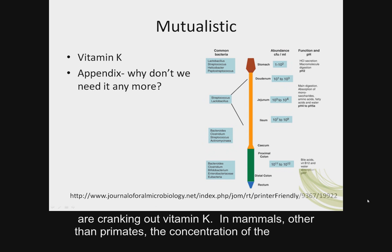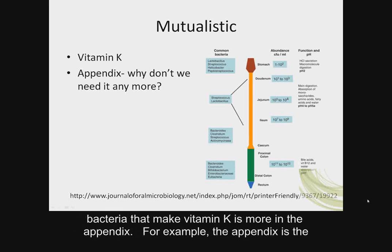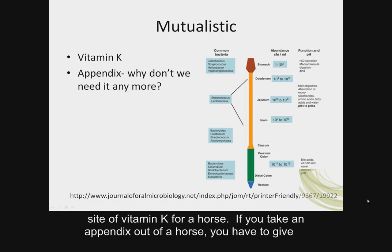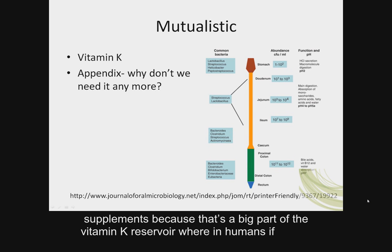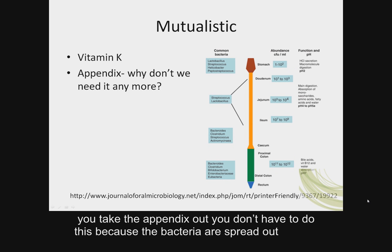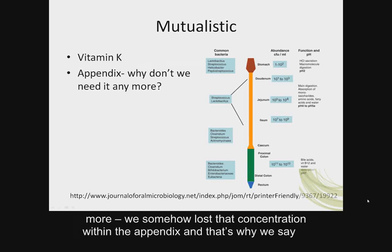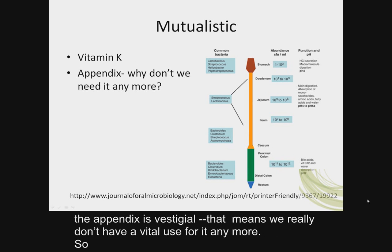In mammals other than primates, the concentration of bacteria that make vitamin K is more in the appendix. For example, the appendix is the site of vitamin K production for a horse — if you remove it, you have to give supplements. In humans, if you take out the appendix, you don't have to do this because the bacteria are spread out more. We somehow lost that concentration within the appendix, which is why we say the appendix is vestigial — we really don't have a vital use for it anymore.